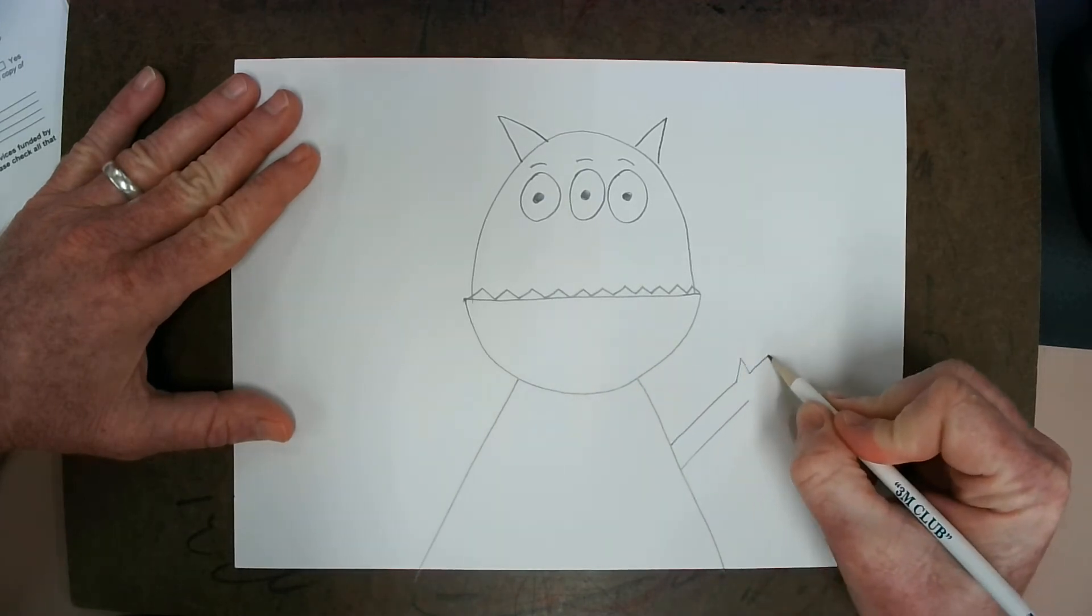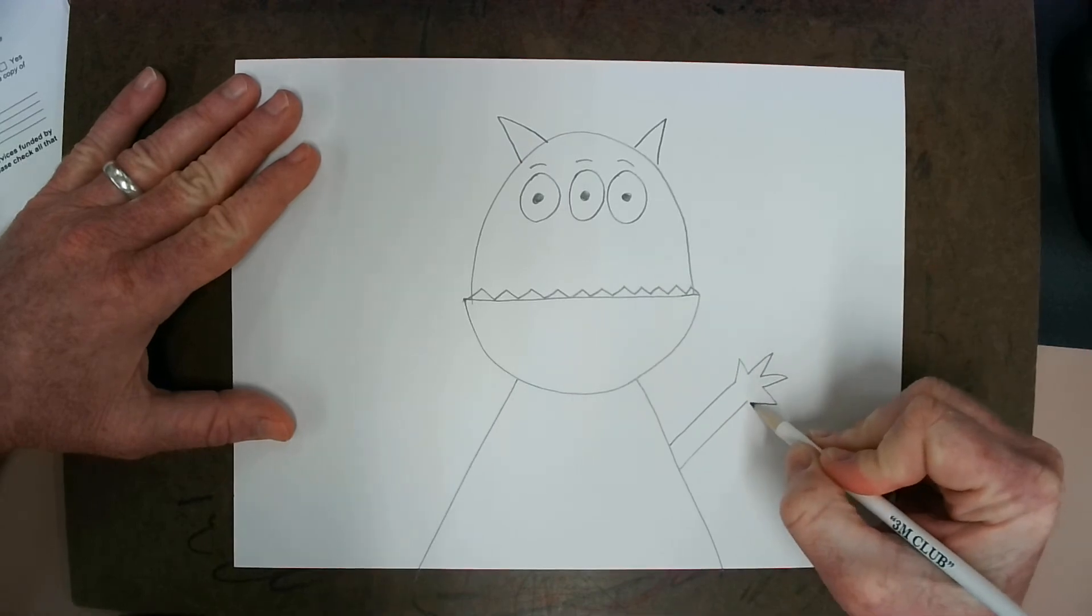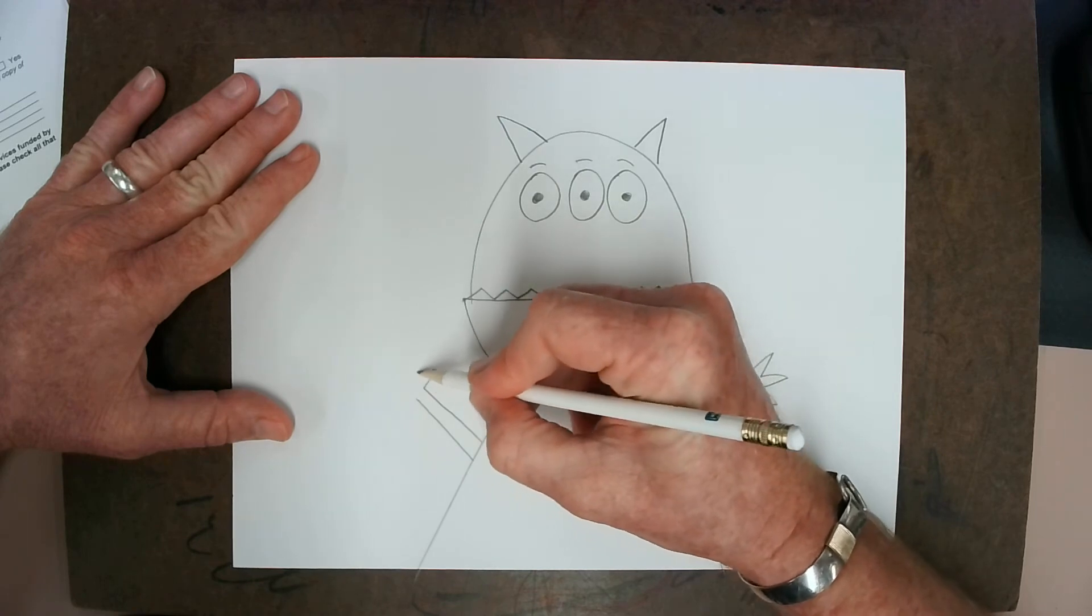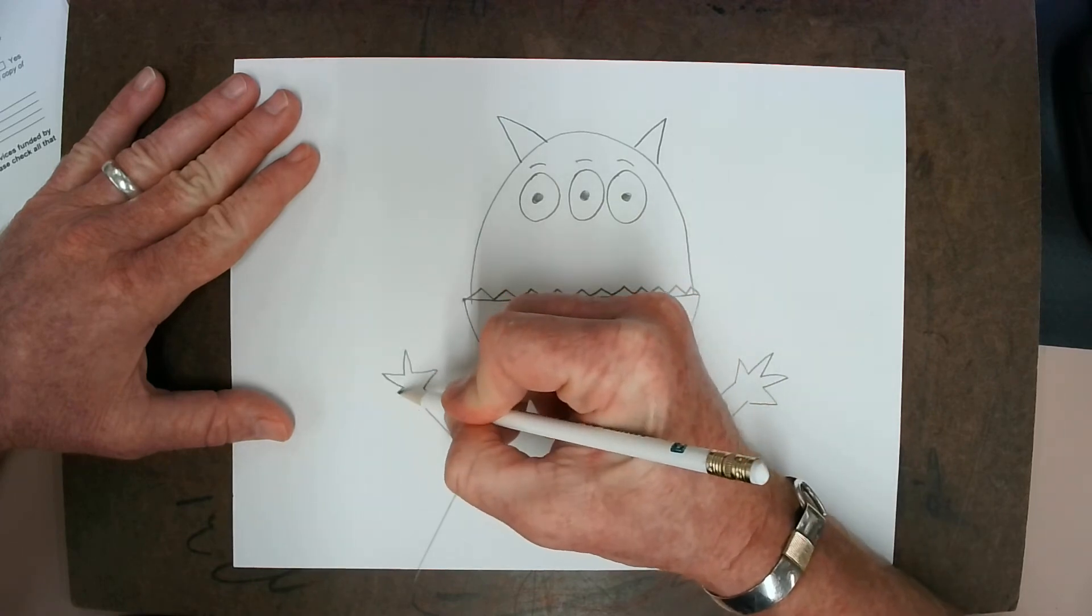There's one arm. And I can just do a little zigzag line like this for my fingers. We'll put two lines there and a little zigzag line for some silly fingers.